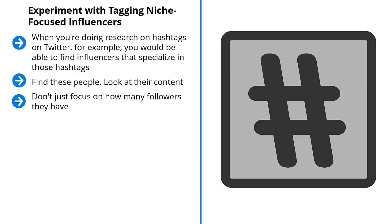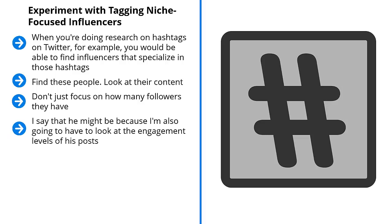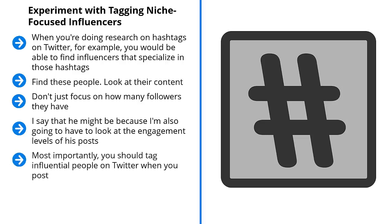Don't just focus on how many followers they have. Instead, look at the total amount of engagement they get and pay attention to the ratio of followers to accounts they follow. For example, if Mike Smith rotates among the 10 hashtags most relevant to your niche, and he's only following one person yet is followed by 15,000 people, he might be influential. But also look at engagement — are his posts getting a lot of retweets, responses, and likes? If so, his account is probably worth following.